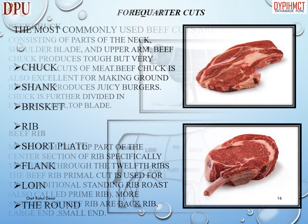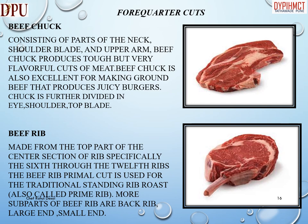Beef chuck consists of parts of the neck, shoulder blade, and upper arm, and produces tough but very flavorful cuts of meat. Beef chuck is also excellent for making ground beef that produces juicy burgers. Chuck is further divided into eye, shoulder, and top blade.